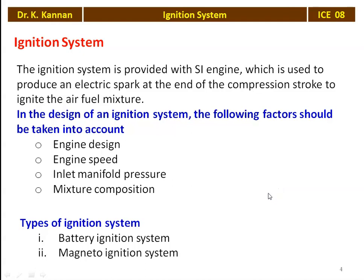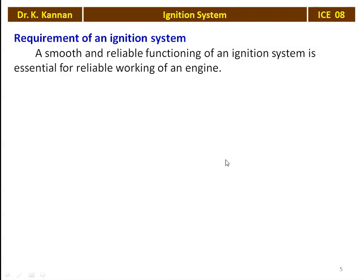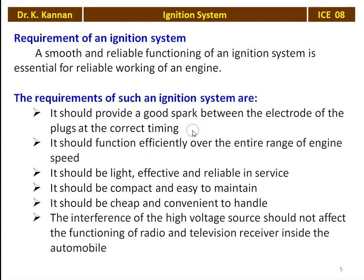There are two types of ignition system: battery ignition system and magneto ignition system. Before we discuss the types, what are the requirements of an ignition system? A smooth and reliable functioning of an ignition system is essential for reliable working of an engine. The performance of the engine — power output, efficiency — everything depends on the combustion of the fuel, and combustion depends on the ignition system, so it is a very crucial part of the petrol engine. It should provide a good spark between the electrodes of the plug at the correct timing — normally before the top dead center at a specific crank angle, such as 15, 20, or 25 degrees — depending on the design and speed of the engine. It should function efficiently over the entire range of engine speed.